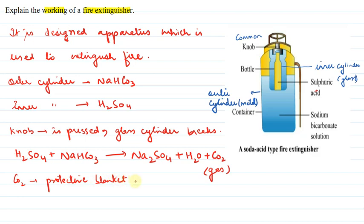How does this protective blanket work? It cuts off the oxygen supply. And we know if there is no oxygen, the fire cannot continue because oxygen is a supporter of combustion. So carbon dioxide forms a protective blanket, it cuts off the oxygen supply, hence the fire gets extinguished.